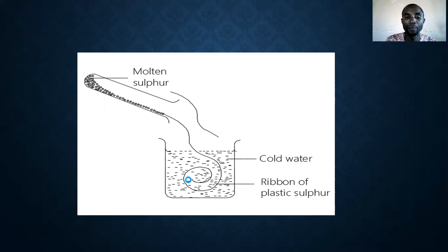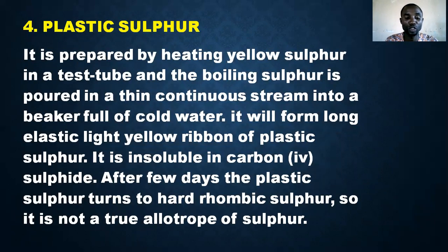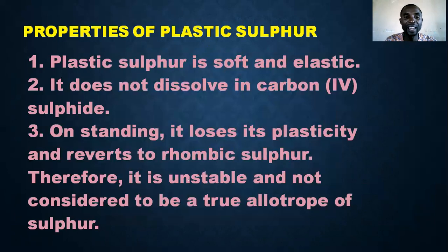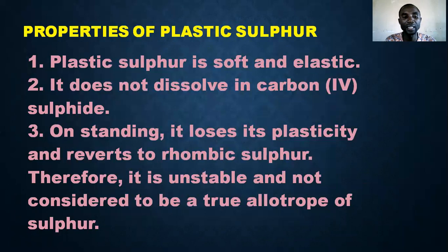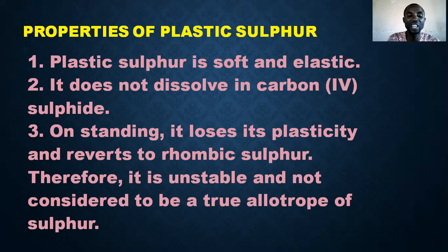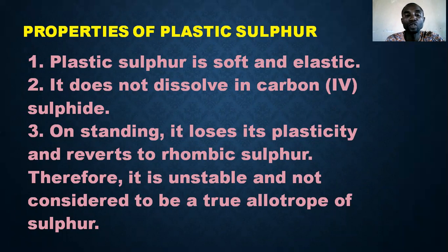That covers plastic sulfur. However, it is not a true allotrope of sulfur. Plastic sulfur is soft and elastic and does not dissolve in carbon disulfide. On standing, it loses its plasticity and reverts to rhombic sulfur. Therefore, it is not considered a true allotrope. The most stable allotrope of sulfur is rhombic sulfur.